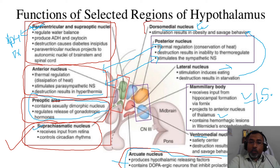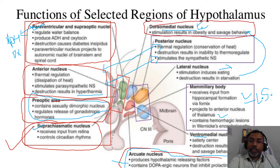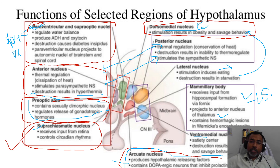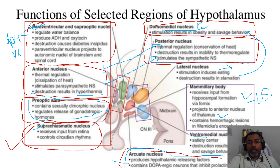The dorsomedial nucleus — its stimulation results in obesity and savage behavior, and that is why it is called the hunger center. The posterior nucleus is responsible for thermal regulation and conservation of heat. Its destruction results in inability to thermoregulate, and it stimulates the sympathetic nervous system.